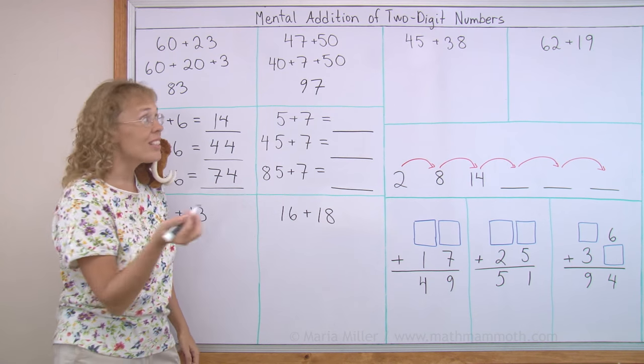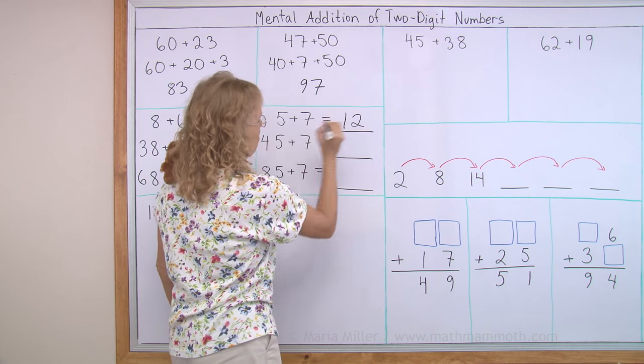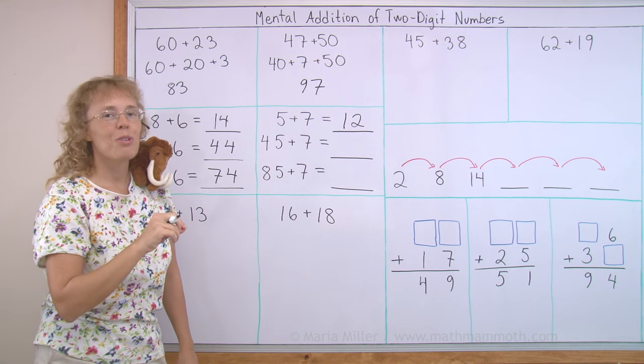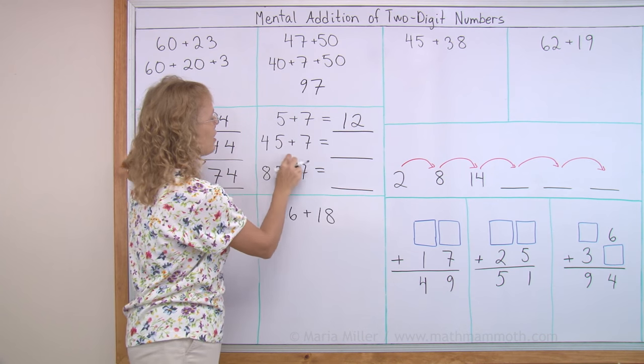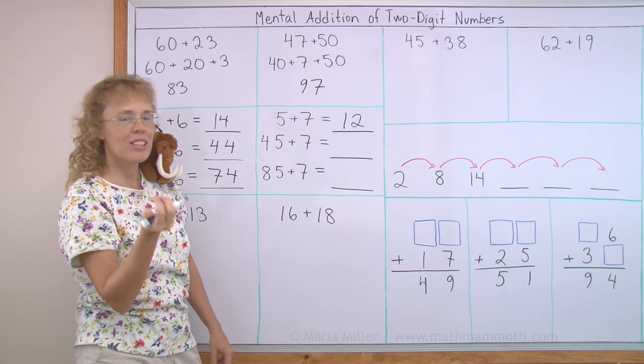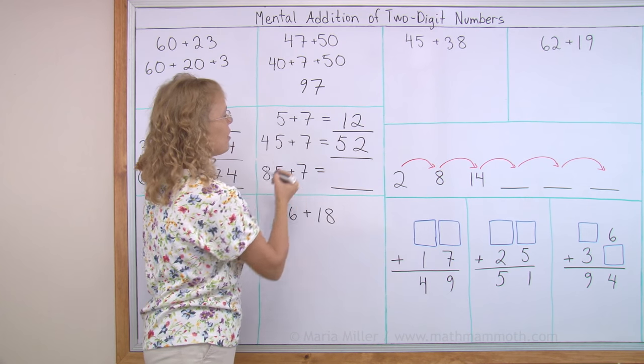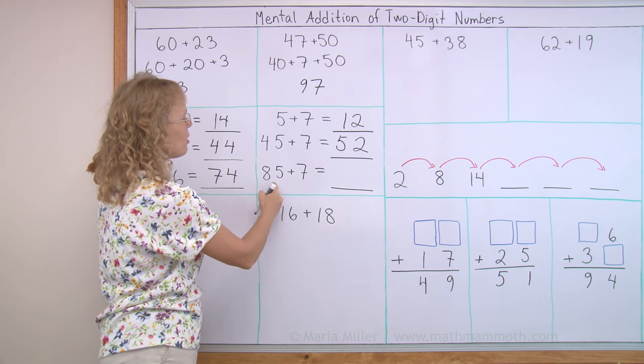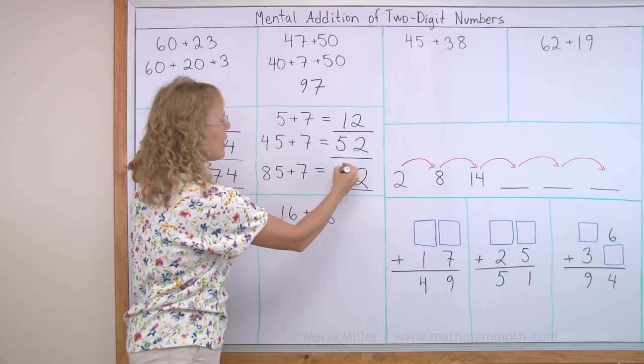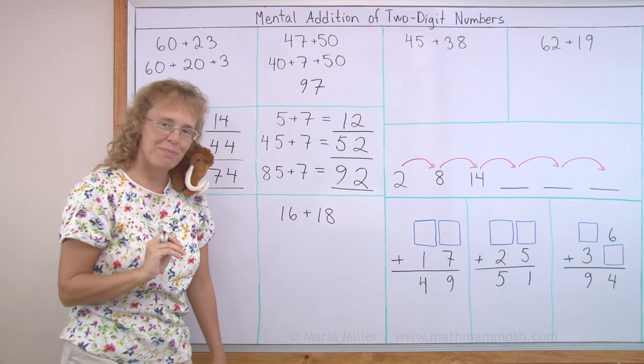5 plus 7, we remember, it is 12, or we should remember. So it is 2 more than 10. So this one here uses the same principle. It is 2 more than the next 10, 52. And this also will be 2 more than the next 10, 92. You got them?